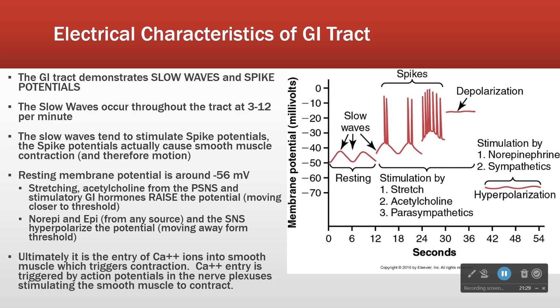At the top point of these slow waves, the cells often do in fact reach their threshold, and then we get the spikes — little action potentials when they hit the top of the slow waves. It's those spike potentials that actually cause the smooth muscle contraction and therefore the motility, the moving of things forward.